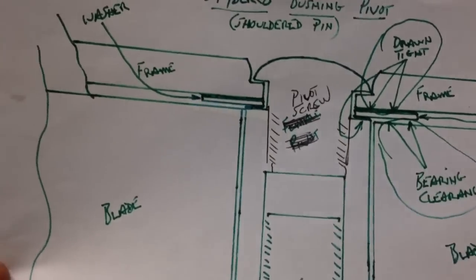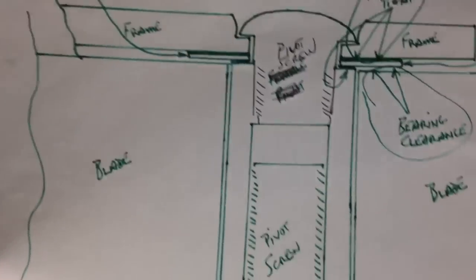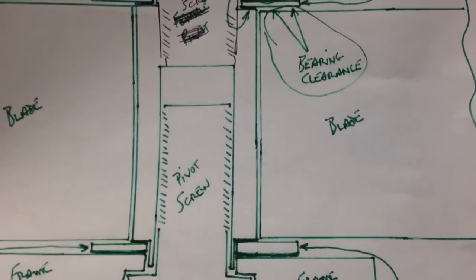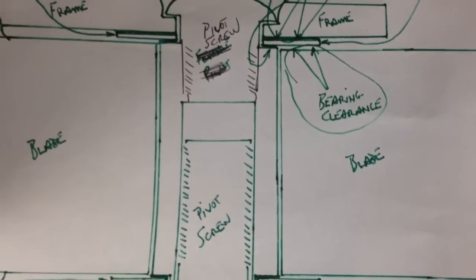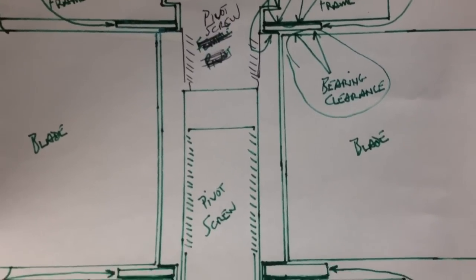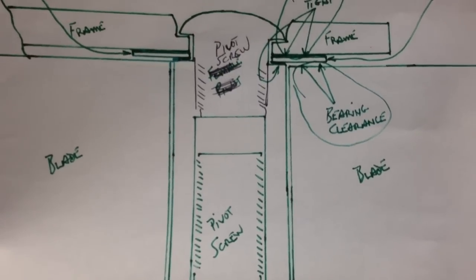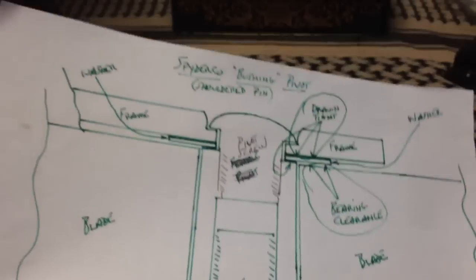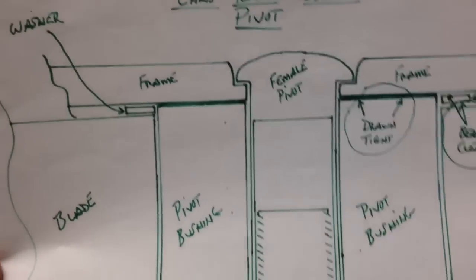I don't know if my bad diagrams help, but for you guys who wonder what all these different pivot constructions are and when we talk about bushing pivots and adjusting pivot screws to remove play, these are the areas of the knife that we're really talking about.